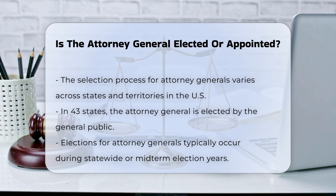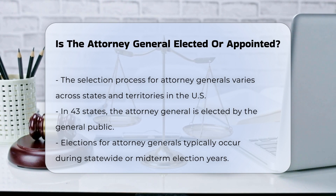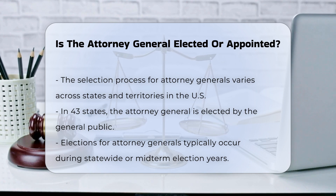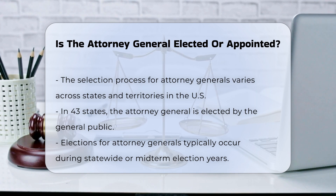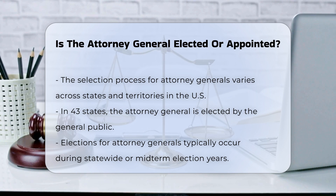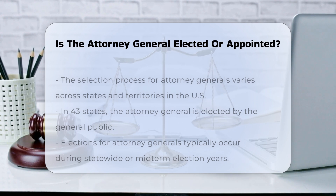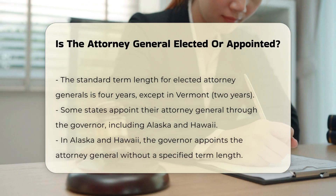Elected by the general public. In the majority of states, the Attorney General is elected by the general public. This is the case in 43 states, as well as in the District of Columbia, Guam, and the Northern Mariana Islands. These elections typically occur during statewide or midterm election years, and the term length is usually four years, except in Vermont where it is two years.